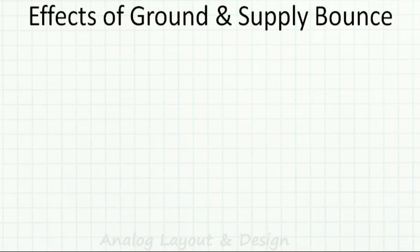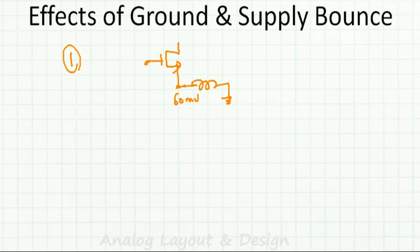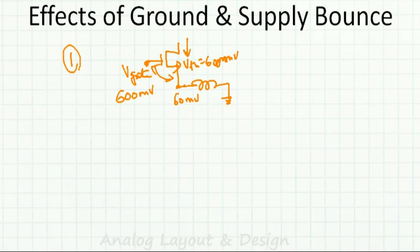The effects of ground and supply bounce are significant. Consider an NMOS transistor: it turns on when VGS exceeds VTH, say 600 mV. But if there is a 60 mV ground bounce at the source, the transistor now requires V_gate greater than 660 mV to turn on. This unpredictability in switching thresholds is a power supply integrity or signal integrity issue.